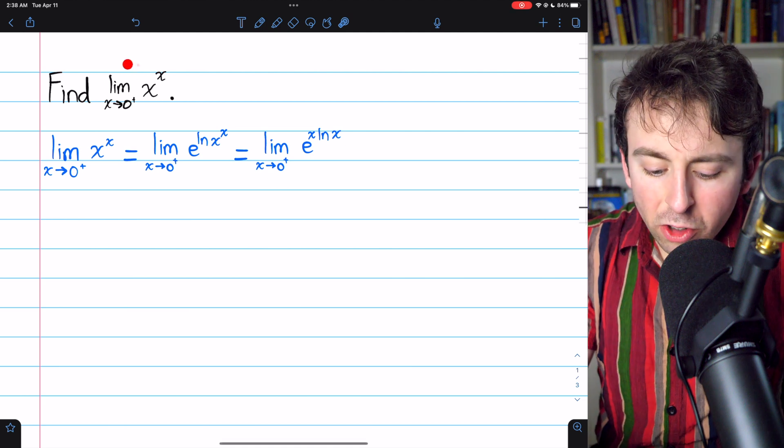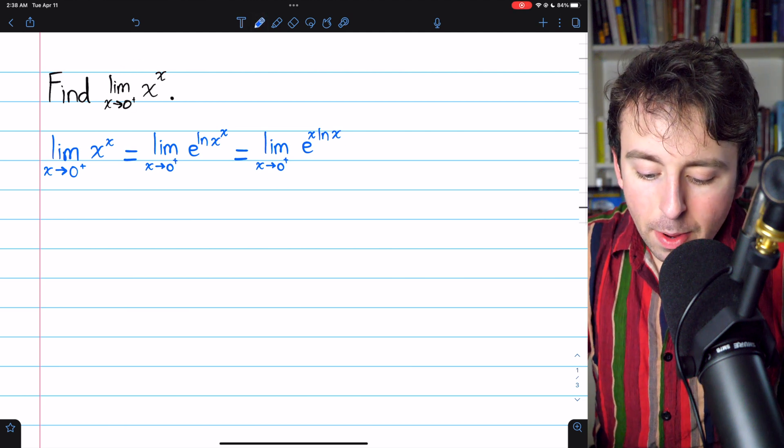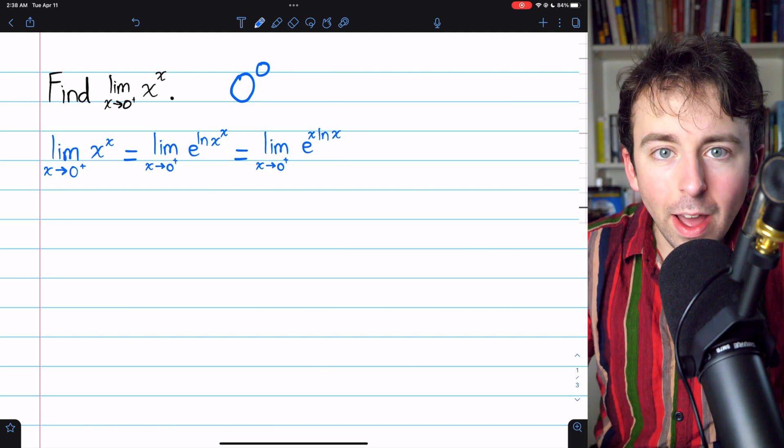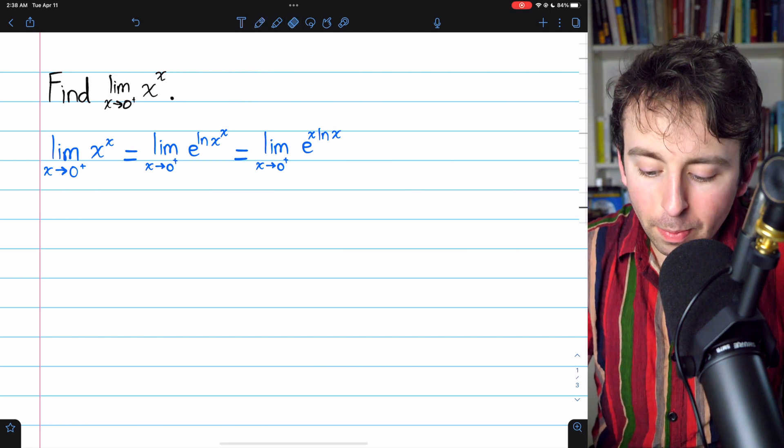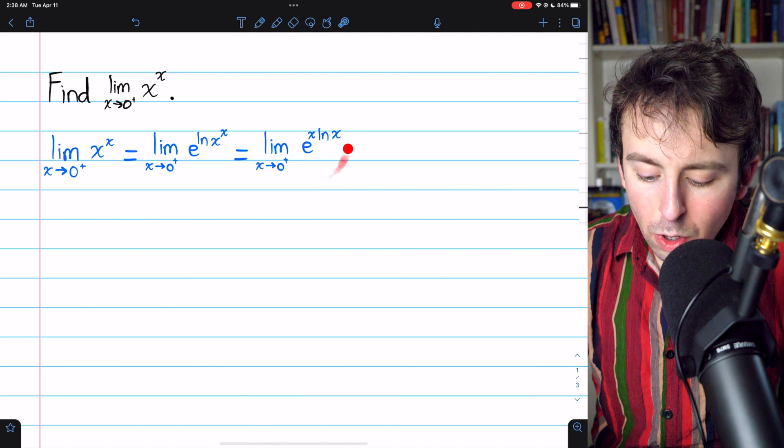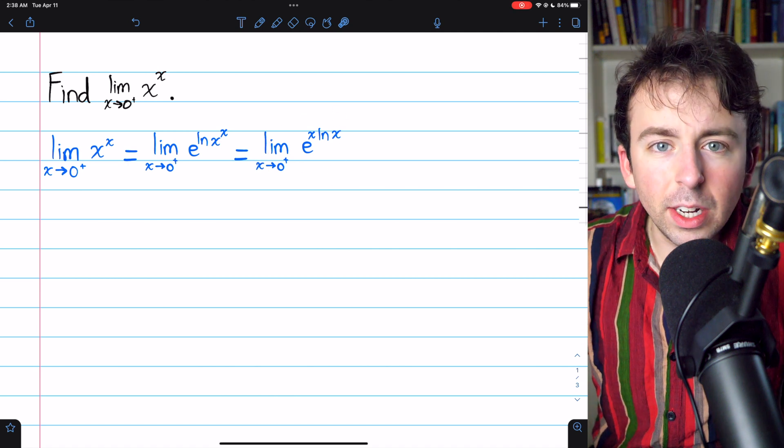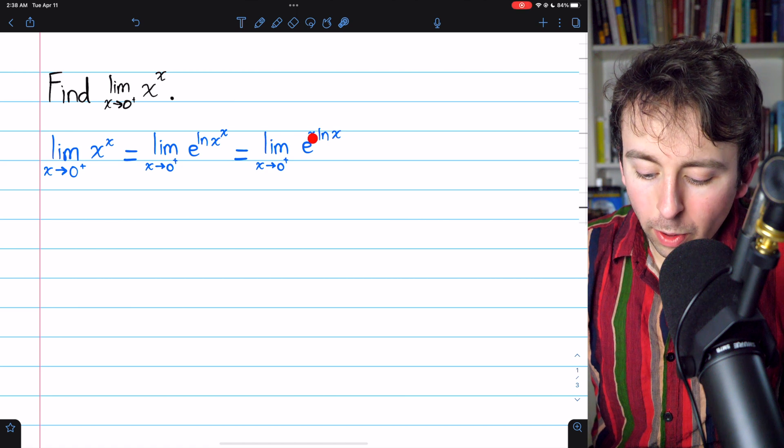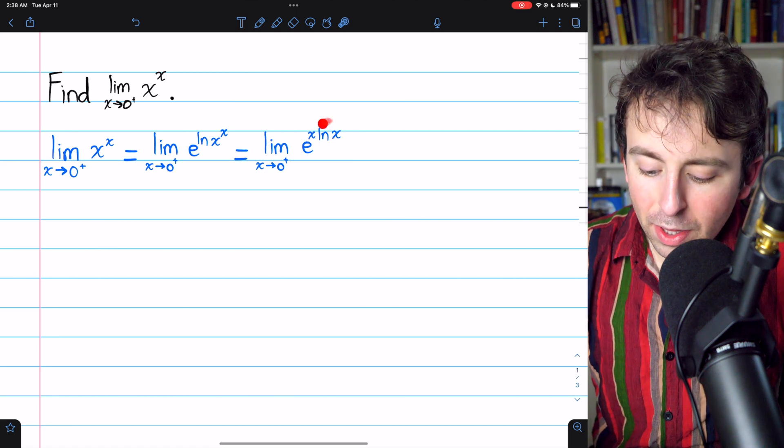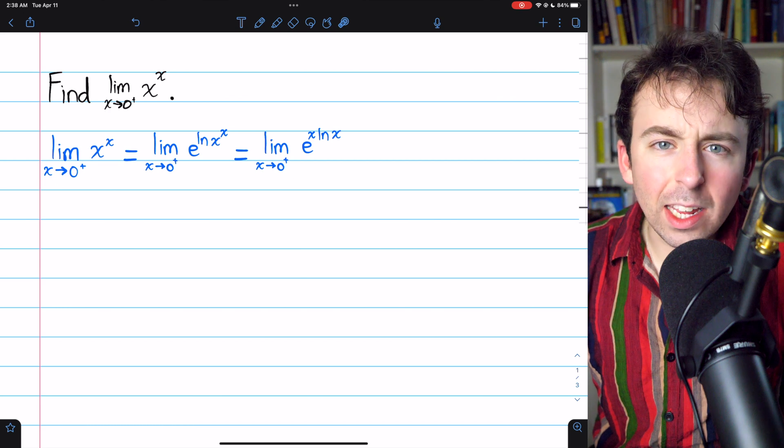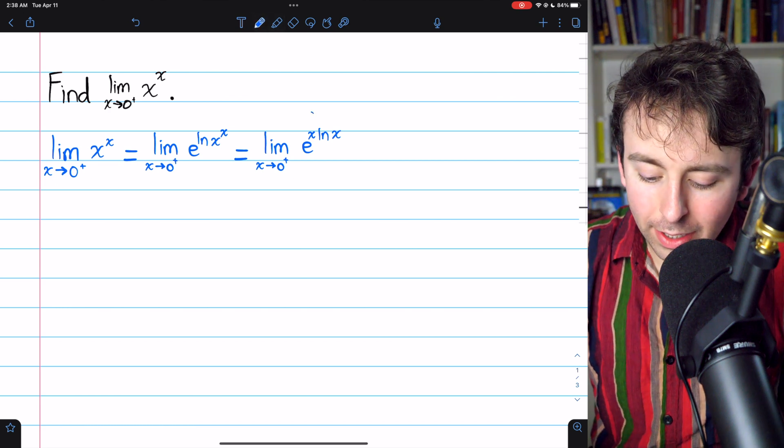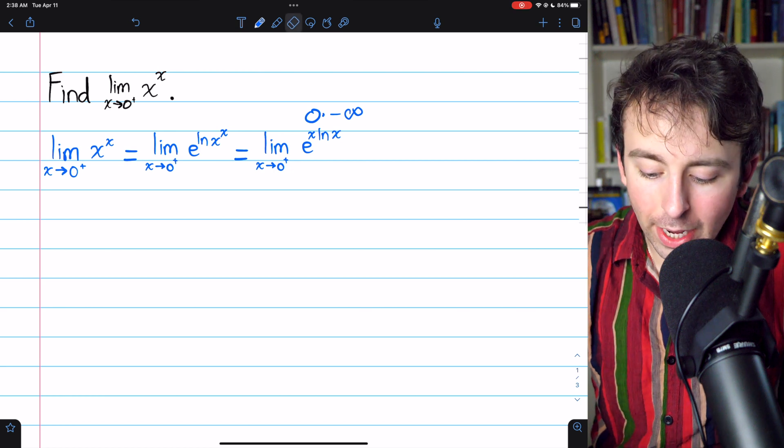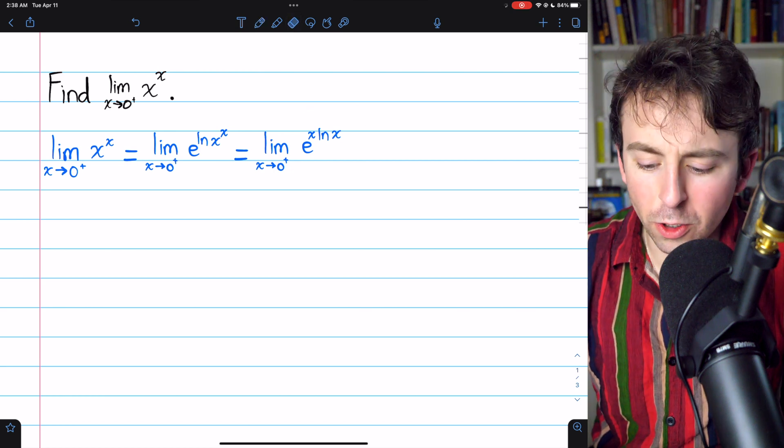Of course, originally, we couldn't evaluate this limit by substitution because 0 to the 0 is undefined. So, just plugging in 0 doesn't help us. But what about now? Could we plug in 0 to this and get a definitive answer? Unfortunately not. We could plug in 0, and this x would be 0. But then ln of 0 approaches negative infinity. So, the exponent is 0 times negative infinity, and that's indeterminate. So, we still have some more work to do.